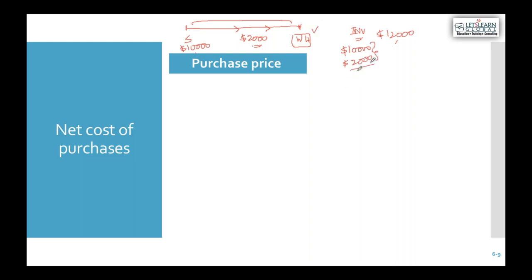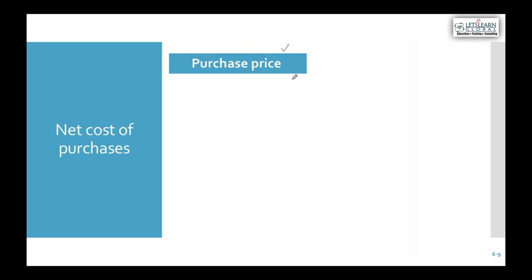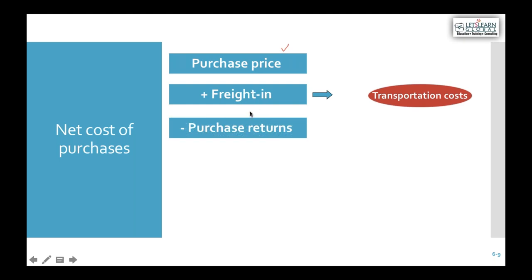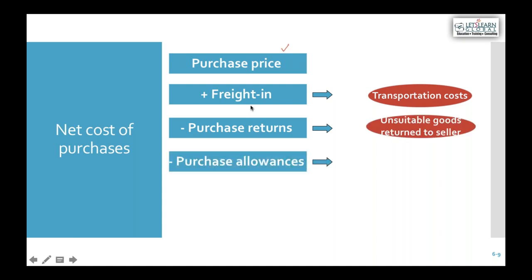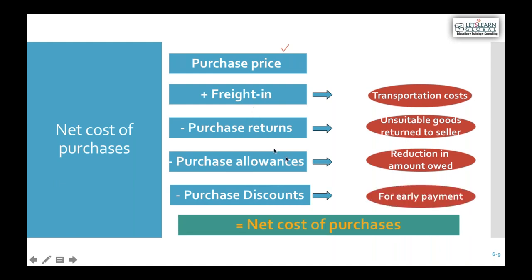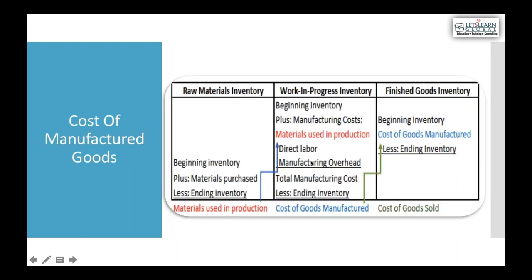So the net cost of purchases includes: purchase price paid to the supplier ($10,000) plus freight, shipping, transportation, customs, and insurance, minus any purchase returns, allowances, and discounts received. The resulting net cost of purchases is what should be assigned as the inventory value - not just the supplier's price alone.